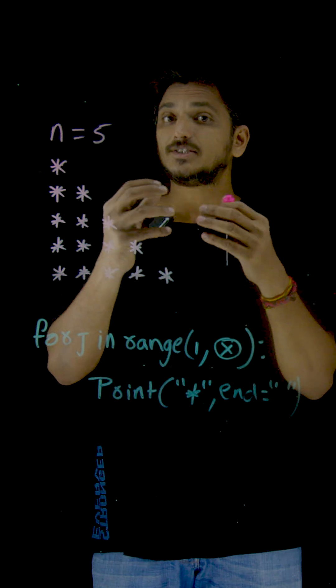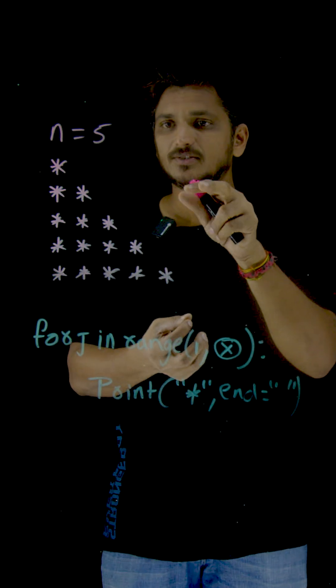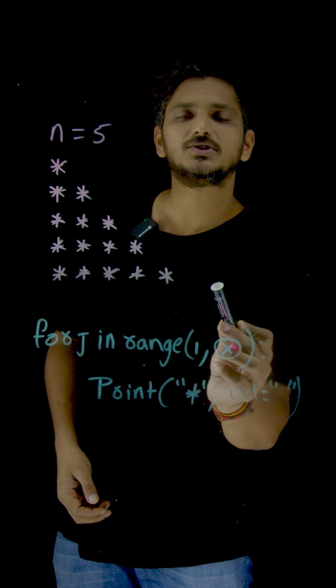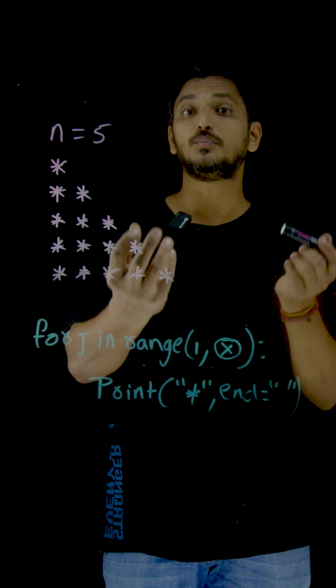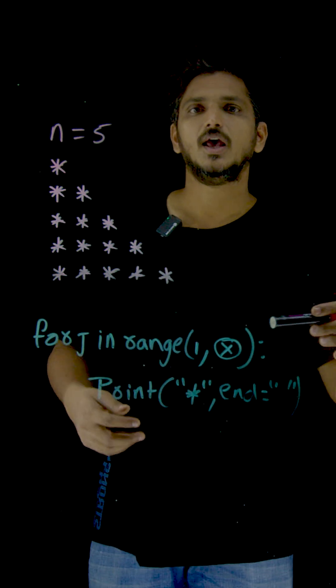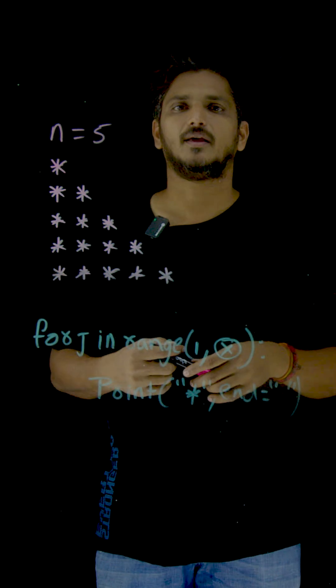Suppose if your n is equal to 6, if your input is 6, you need to display a sixth line with 6 stars. If your input is 10, the 10th line has 10 stars. That is what you need to display.